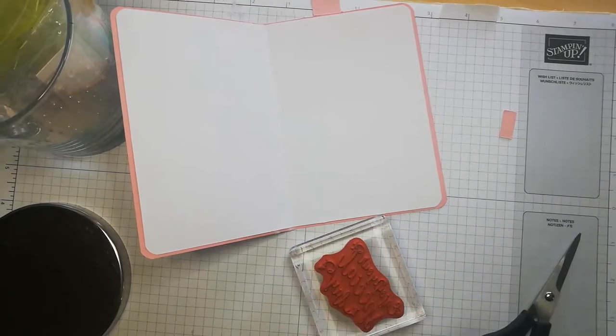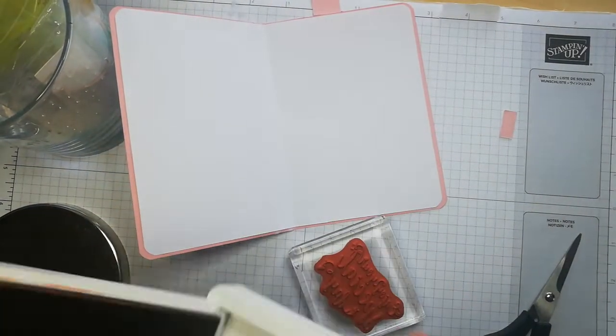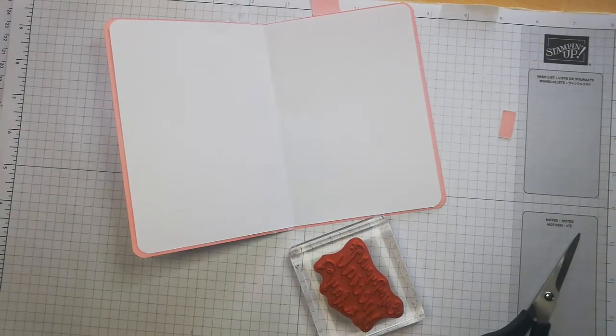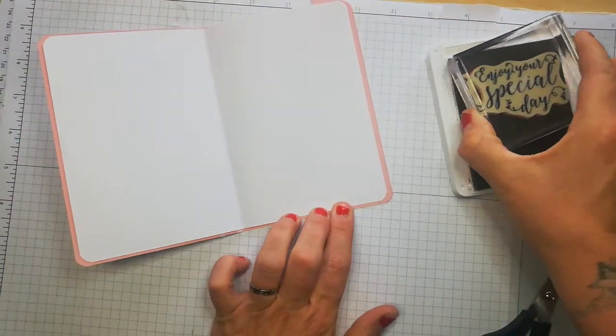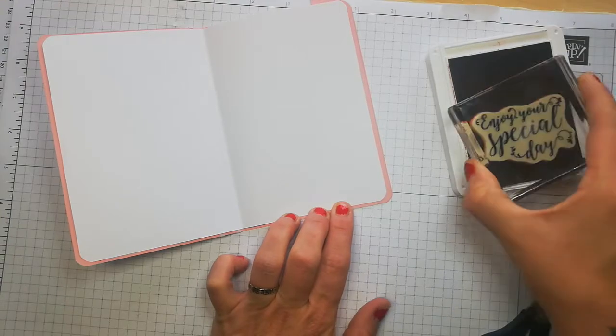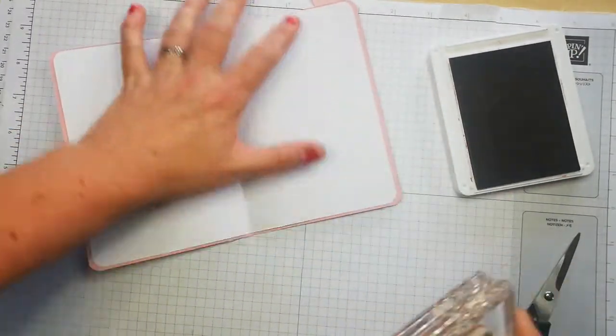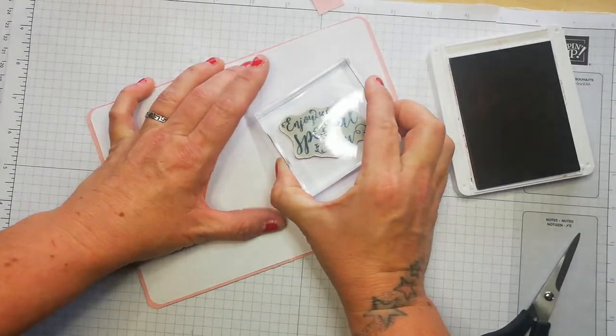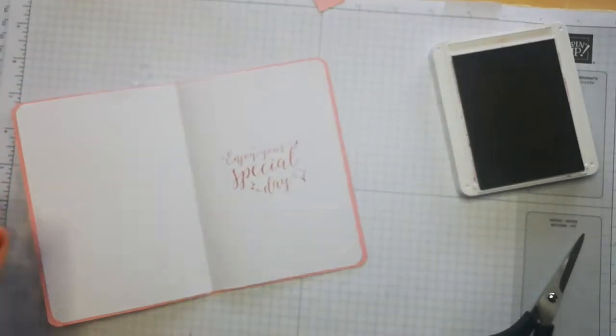I'm going to use the Blushing Bride ink. Just load that up with your ink. I am going to put that right in the middle like so. Adorable.